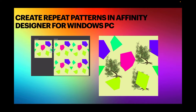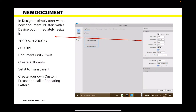Let's begin with a new document in Designer. I'll start with the device preset but immediately resize it to 2000 pixels by 2000 pixels, 300 DPI, with the document unit in pixels. Check 'Create Artboards' and set it to transparent too — that's a good idea. Create your own custom preset and call it 'Repeating Patterns' so it's there in your presets anytime you need it.